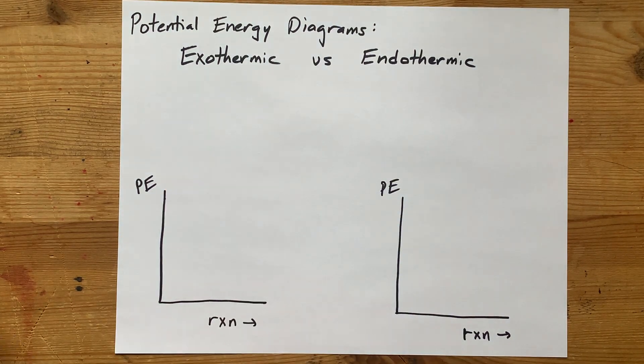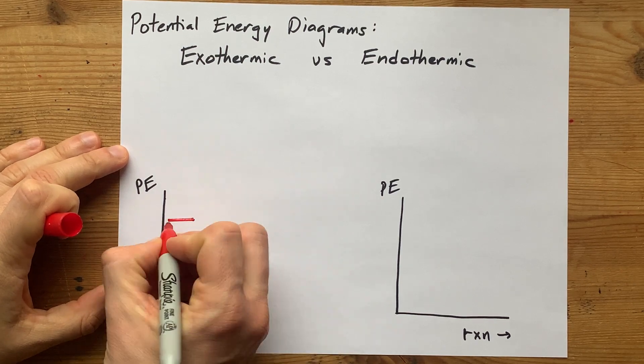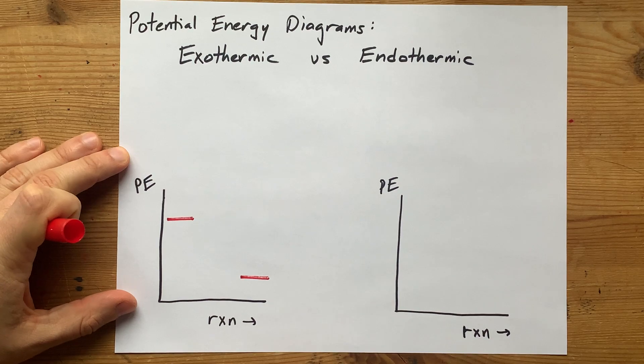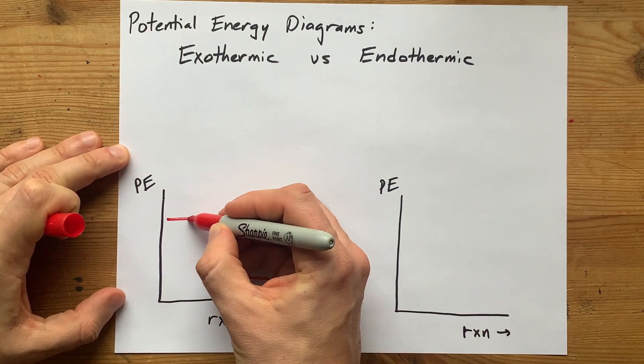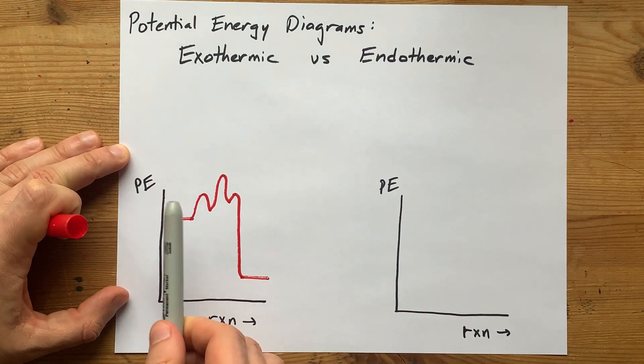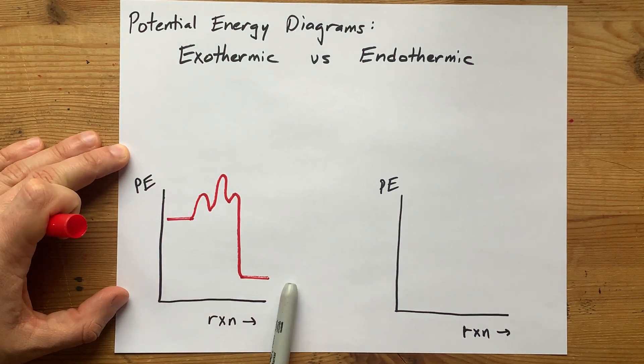An exothermic reaction will have its reactants higher up on the potential energy diagram than the products. It does not matter how many humps or how high the humps are. What matters is that you're starting higher than you're ending.